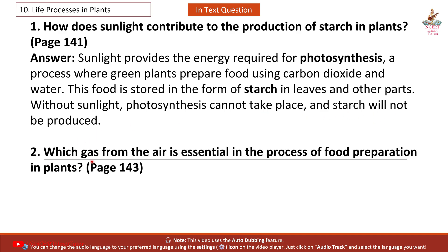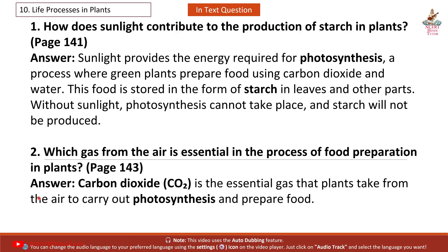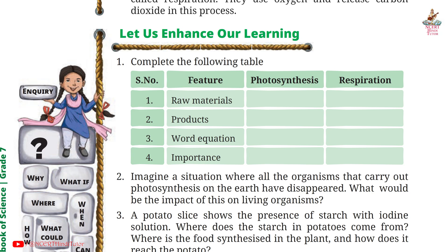Question 2: Which gas from the air is essential in the process of food preparation in plants? Answer (Page 143): Carbon dioxide (CO2) is the essential gas that plants take from the air to carry out photosynthesis and prepare food.